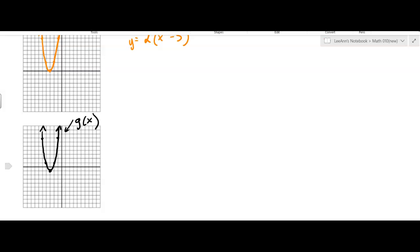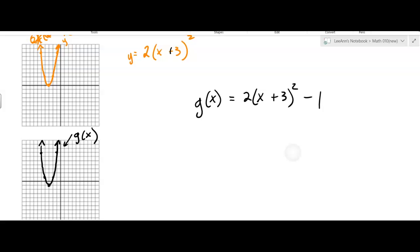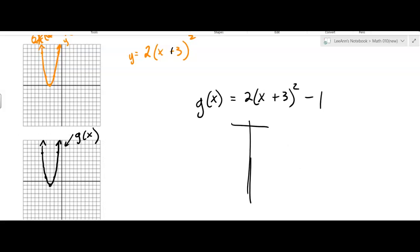If you were going to use a table of values, so the original equation said g(x) equals two times (x + 3). Oopsies, I forgot to put that as a plus three, sorry, squared minus one. That was the original. Now, if you were going to do a table of values, which you might find it easier.